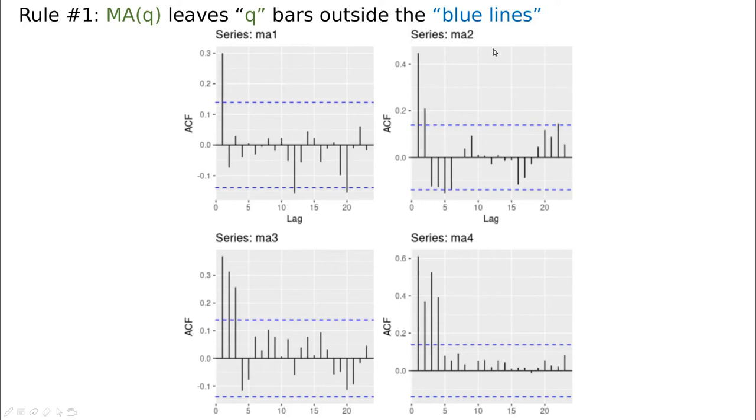If you're simulating an MA2 process, then you have two lines, and so on. The sign here depends on the sign of the coefficient. If the first coefficient is positive, you're going to have one bar positive. If it's negative, it's going to be negative. The interesting message is that whenever you take a look at the autocorrelation function, the number of bars outside these dashed blue lines are going to tell you how many correlations you have in the moving average part of the model.